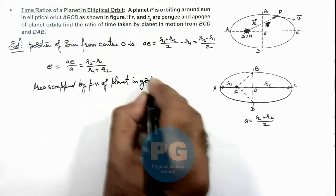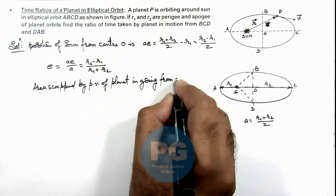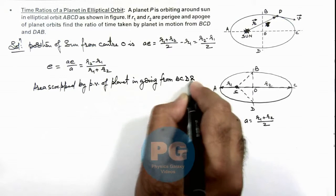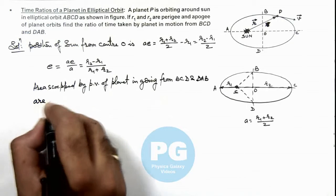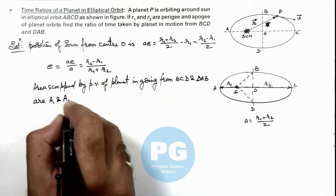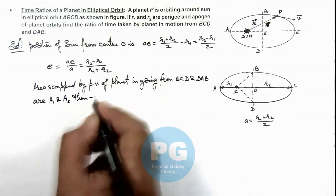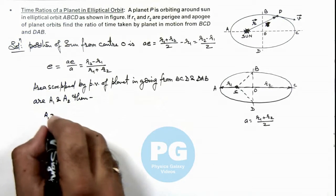In going from BCD and DAB are A1 and A2. Then the values can be written as A1 is equal to this half area of ellipse.